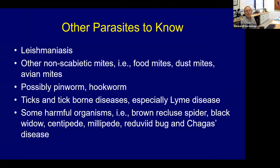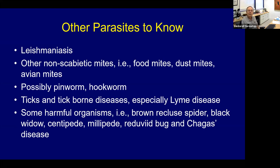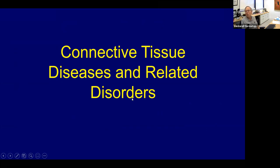Other parasites to know: Leishmania, non-scabietic mites (food mites, dust mites, avian mites), hookworm, pinworm, tick-borne diseases — especially Lyme disease — and the newly described STARI syndrome, probably caused by a Borrelia organism. Also know about non-parasitic harmful organisms: brown recluse, black widow, centipede, millipede, Chagas disease. These are 'gimme questions' — straightforward, no real controversy — so study them and get those points to back up your score on tougher questions.